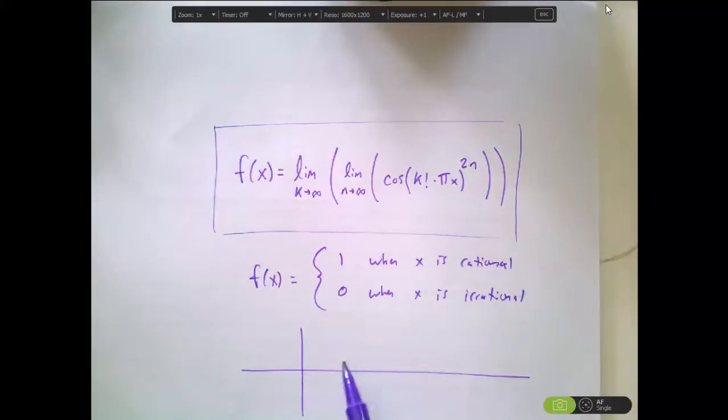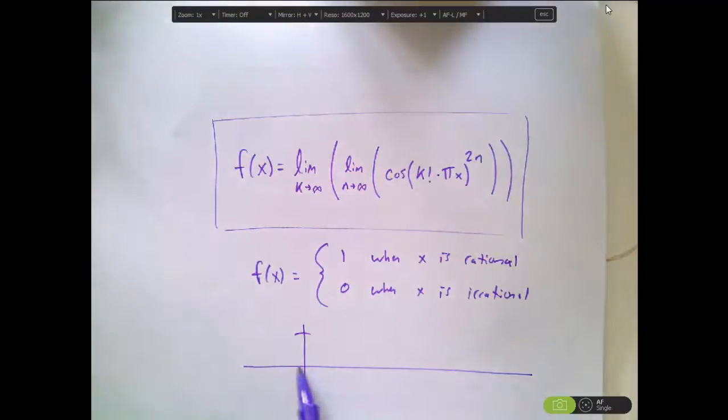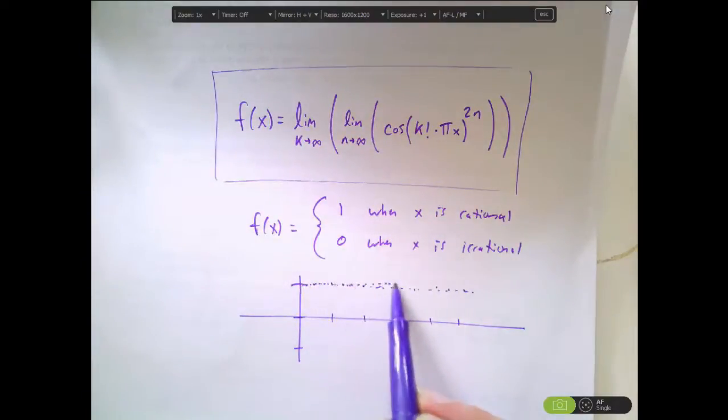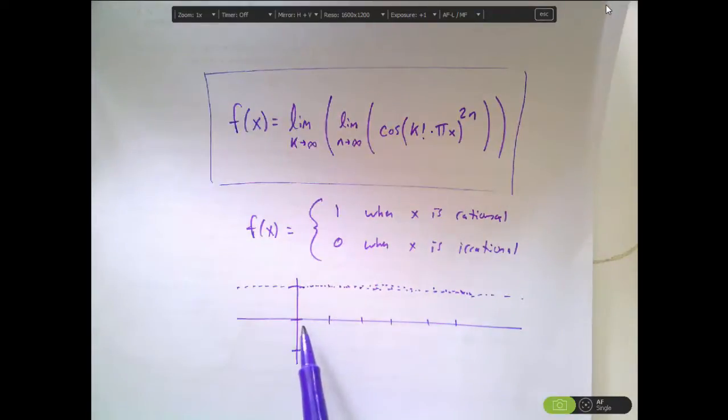You might know that between any two rational numbers, there's an irrational number, and between any two irrational numbers, there is a rational number. So it seems like what's going to happen is, at rational numbers, we're going to have 1. So at all the integer values and at all the fractional values, I'm going to have sort of a very dense scatter of points up here. Whoops, this is a straight line. But then all the irrational values, like the square root of 2 and like π and like e and like the other square roots, I'm going to have a scatter of points at 0.